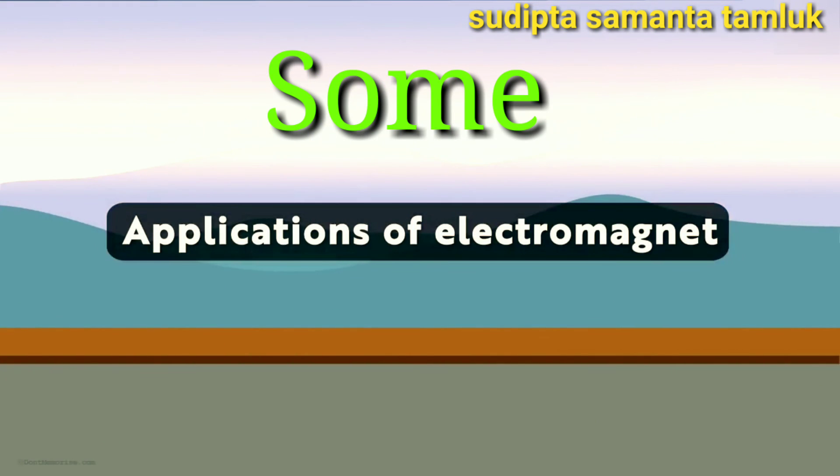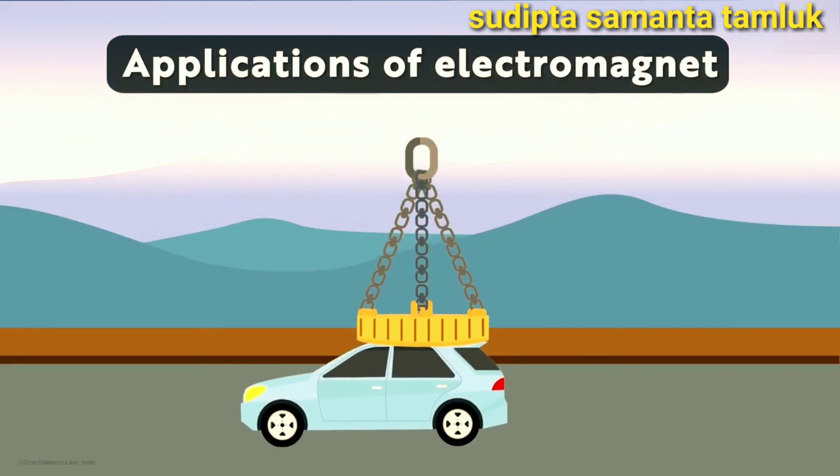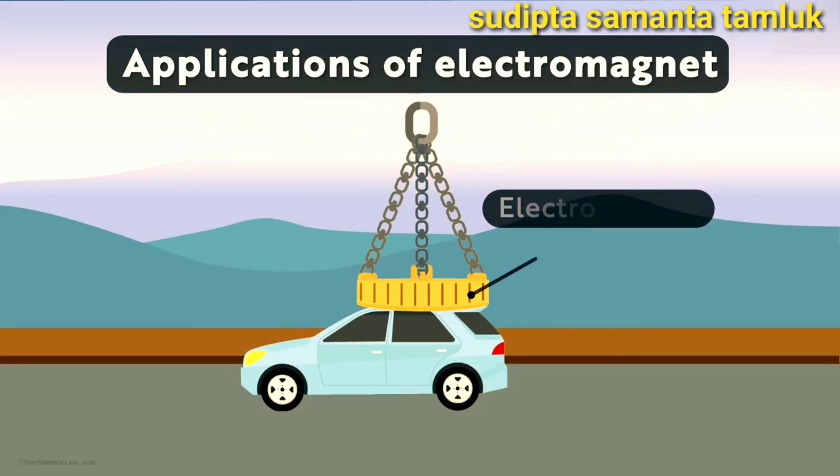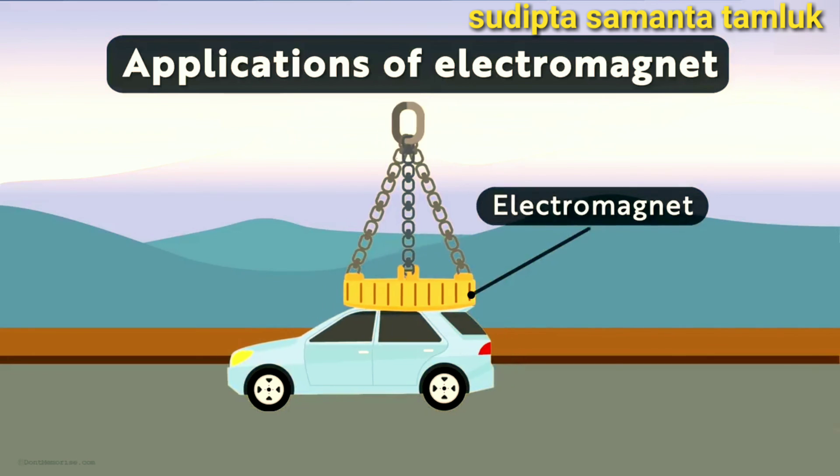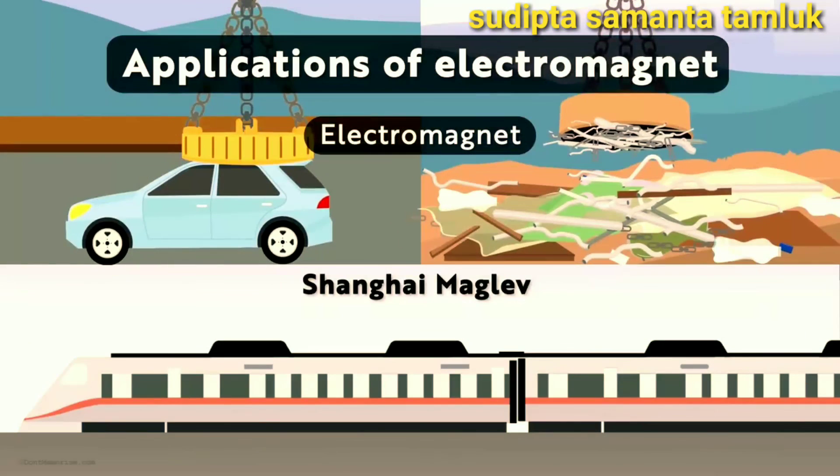Some Application of Electromagnet. You must have seen large machines used to lift up cars. They have an electromagnet in them. This electromagnet is so strong that it can lift the whole weight of the car. Electromagnets are also used to separate metal objects from a pile of junk. The Shanghai Maglev train is touted as the world's fastest train and it works on the concept of electromagnetism.